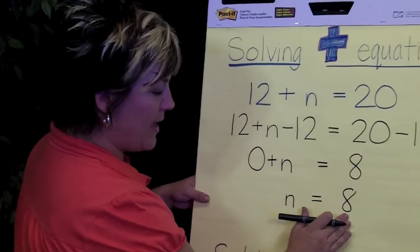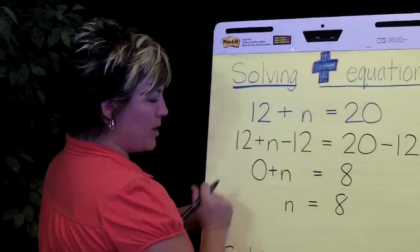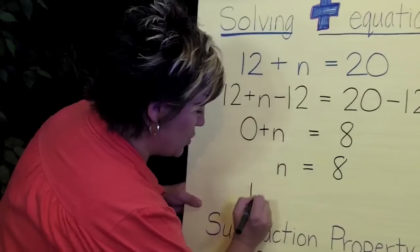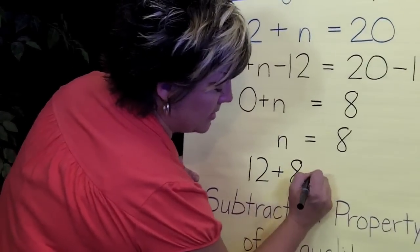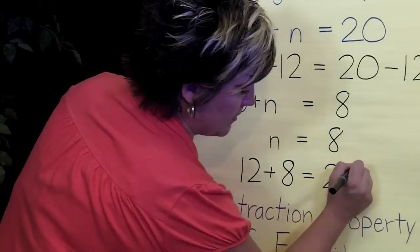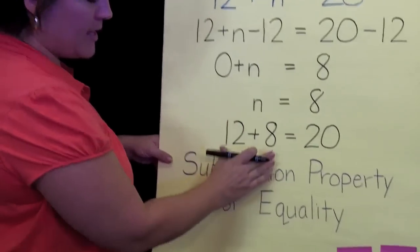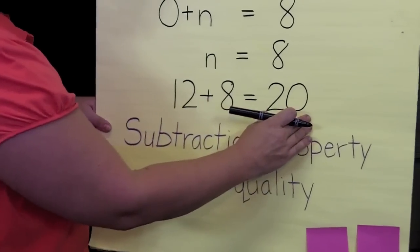If we go ahead and take that n, and we're going to replace this n up here with the 8, we'll end up saying 12 plus 8 equals 20. And when we solve that, we'll see that it is 20 equals 20.